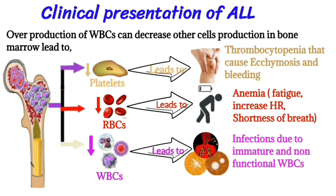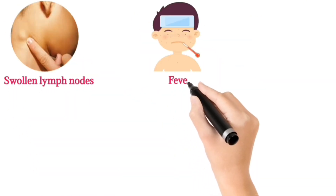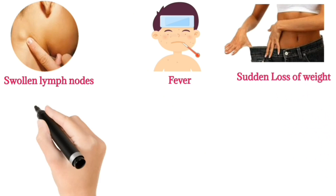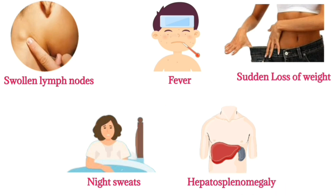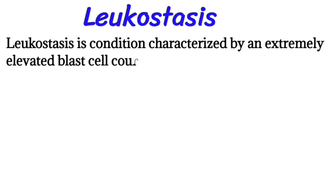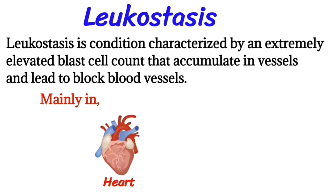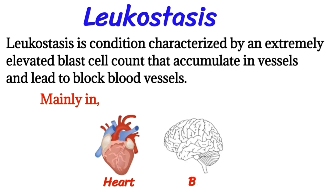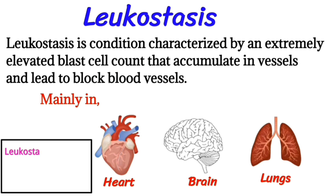Other clinical features include lymphadenopathy, fever, night sweats, sudden weight loss, and hepatosplenomegaly. Leukostasis is a condition characterized by an extremely elevated blood cell count where cells accumulate in vessels and block blood vessels, mainly occurring in the heart, brain, and lungs.